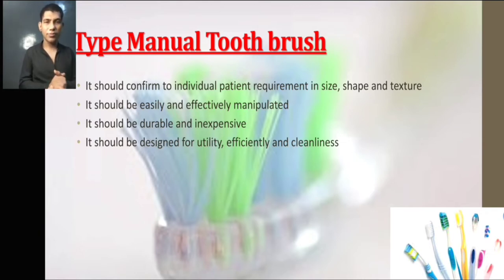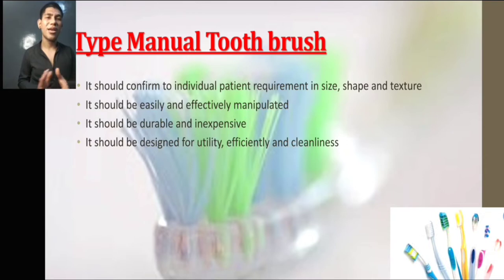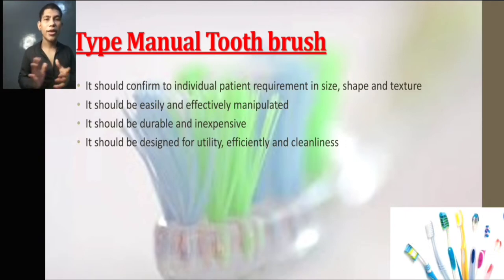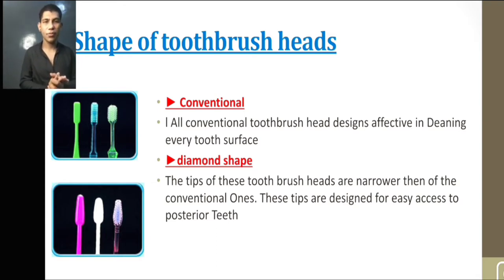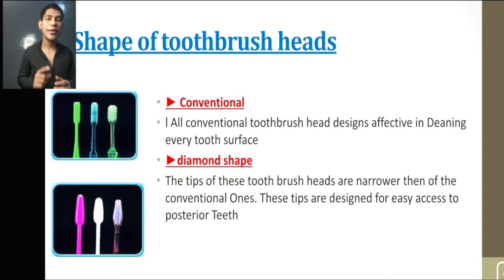In my words, a toothbrush should conform to the individual patient's requirement in size, shape, and texture. It should be easily and effectively manipulated, durable, and should be designed for effective cleanliness. The shape of the toothbrush head can be conventional — all conventional toothbrushes have a head designed to clean every tooth surface effectively — or diamond-shaped, where the head is narrow and colored, designed for easy access to the back teeth.